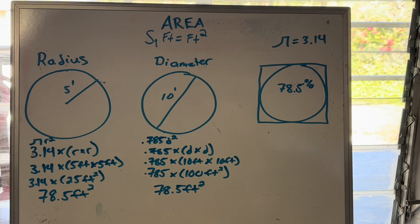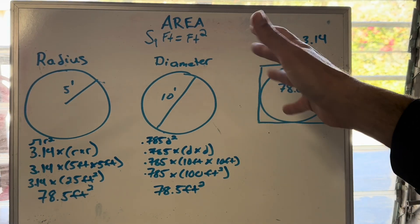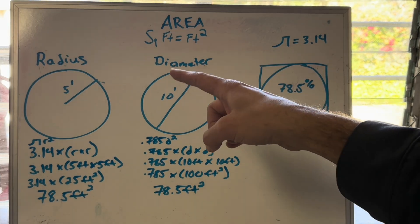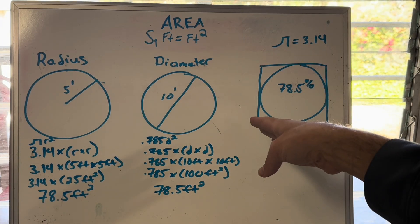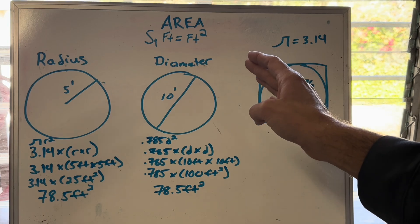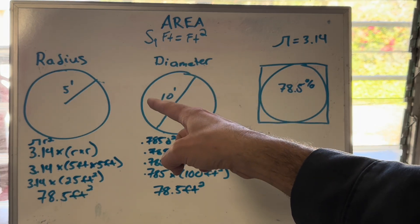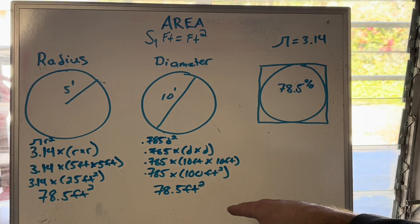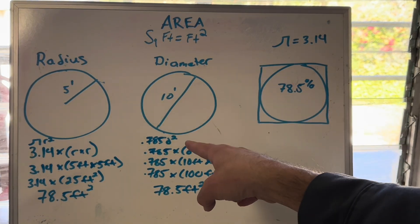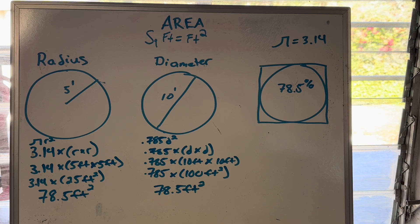You might have a question that says you have a five-foot radius circle and need to find the square feet. Since I prefer diameter, I would multiply five times two to get 10. If you prefer radius and get a question that tells you the diameter, you would divide by two — so 10 divided by two is five. I wanted to use the same number here so you can see how you'll get the same exact answer using a 10-foot diameter circle, which is the equivalent of a five-foot radius circle.